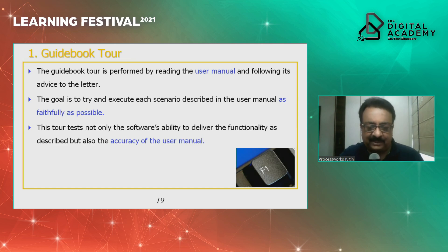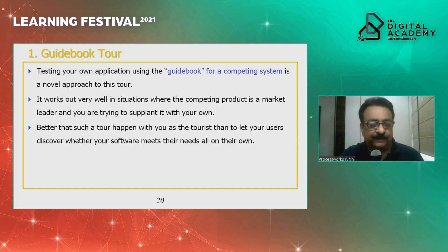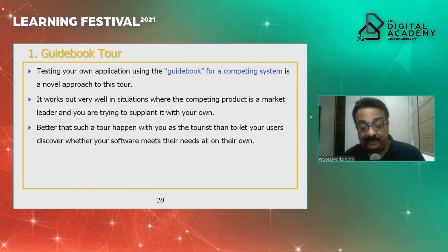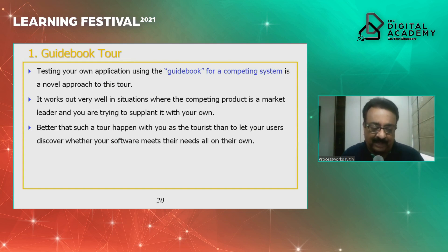Running the guidebook tour tells us whether the user manual matches what the software does, and vice versa — because software might be doing things not in the user manual. So a guidebook tour is like a prerequisite; it's about the main things the software is supposed to do. An interesting twist is to use a competitor's user manual or guidebook. While going through the competitor's guide and trying to use our own software, we may find features in the competitor's book that don't exist in ours, or that the competitor does things in fewer steps.